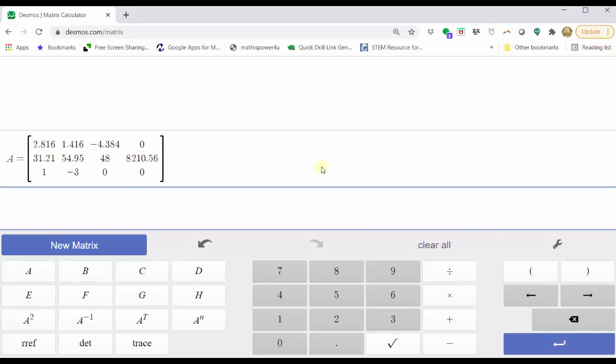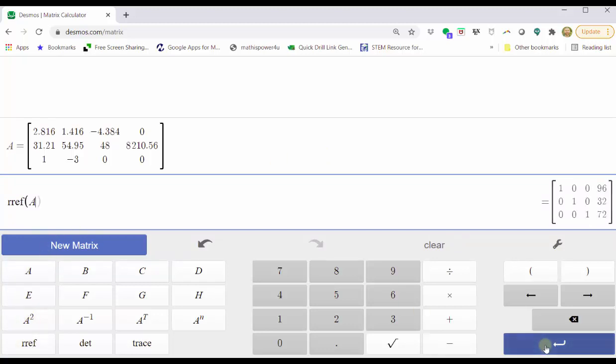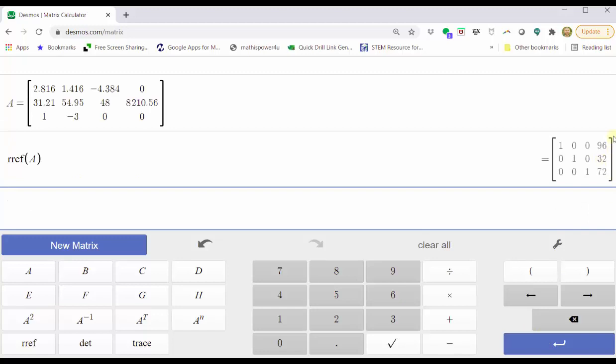Now to write matrix A in reduced row echelon form, we click RREF, select matrix A, and enter. And on the right, we have the augmented matrix in reduced row echelon form. Let's write this down and interpret the results.